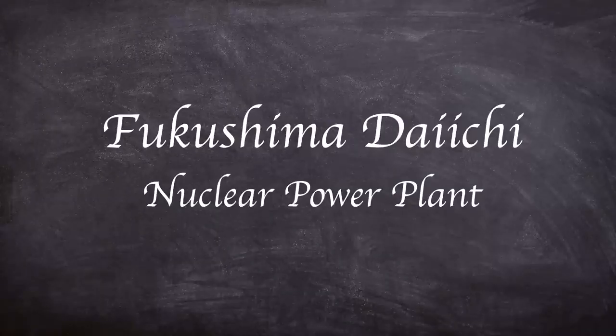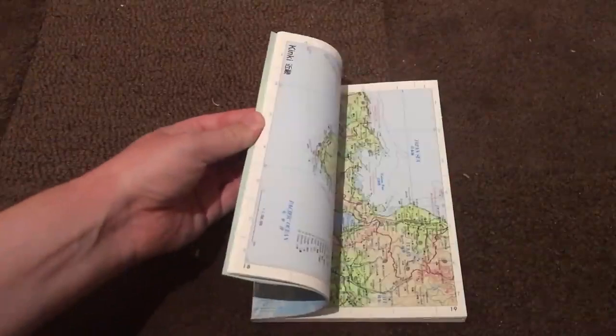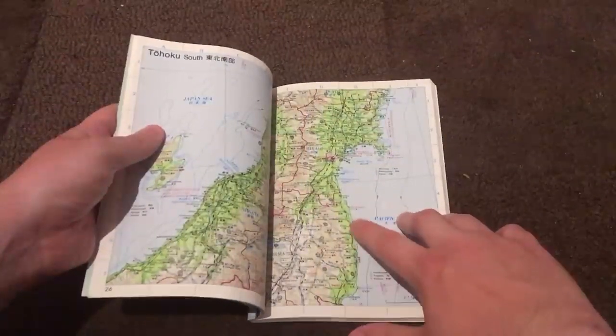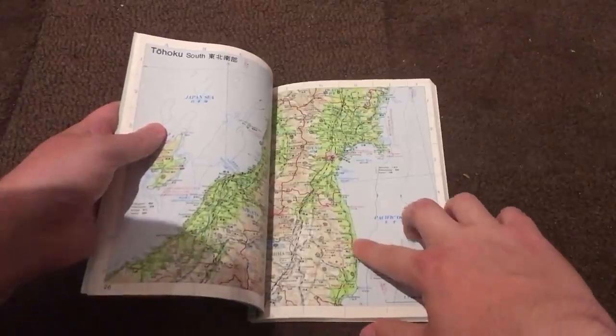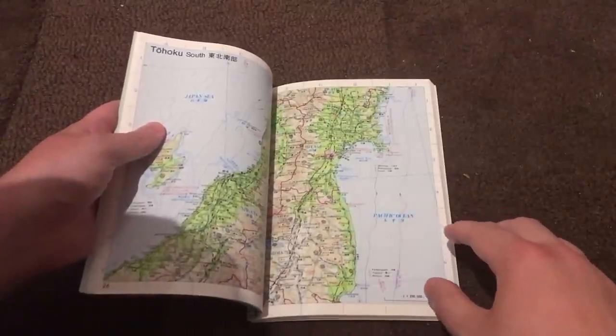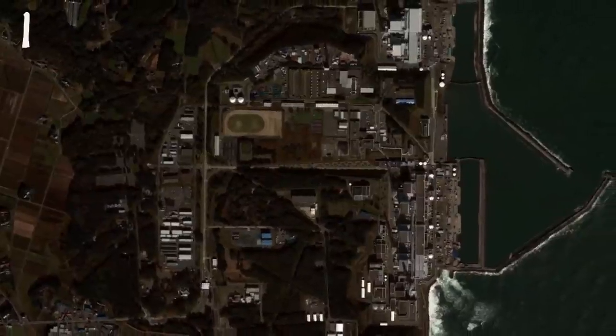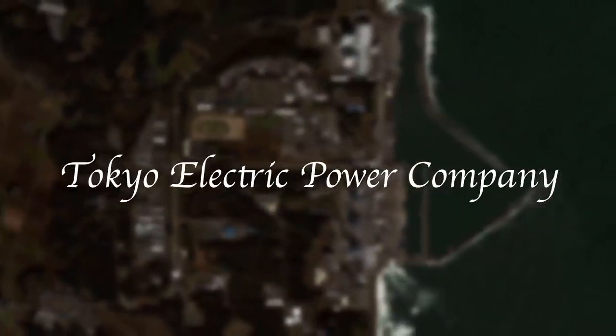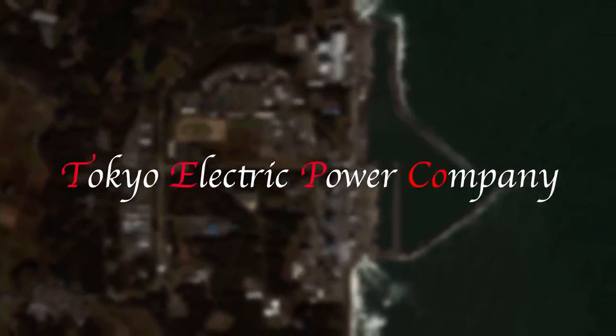The Fukushima Daiichi NPP site lies approximately 220 kilometers north of Tokyo at almost the midpoint of the Pacific coast. It straddles Okuma and Futaba Townships in Fukushima Prefecture. The site is approximately 3.5 kilometers large. It is operated and managed by Tokyo Electric Power Company or TEPCO.